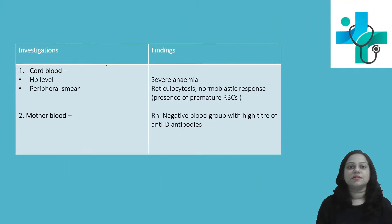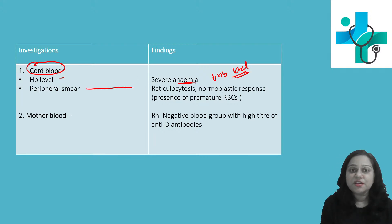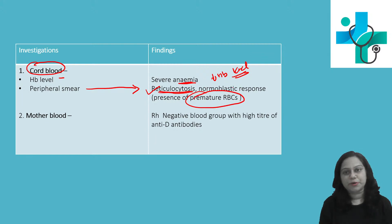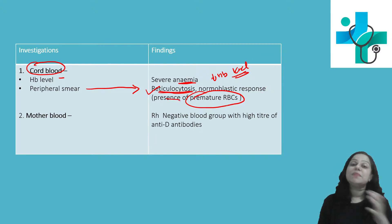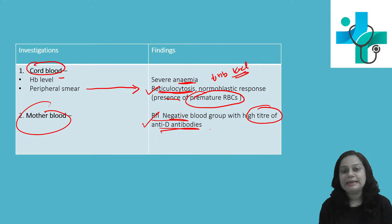To investigate hemolytic disease of the newborn, if you assess the cord blood hemoglobin level, there will be severe anemia — a decrease in hemoglobin level. On peripheral smear, as discussed, there will be an increase in reticulocyte count, meaning reticulocytosis, and there will be presence of premature RBCs in the smear due to normoblastic response in the bone marrow. If you assess the mother's blood, the RH negative blood group will be found with a high titer of antibodies.